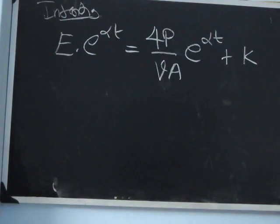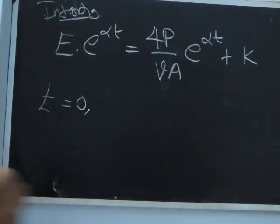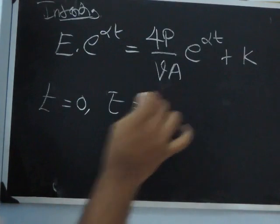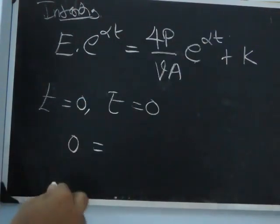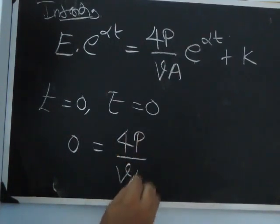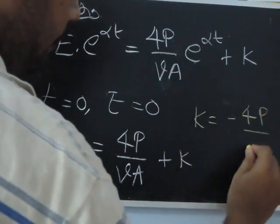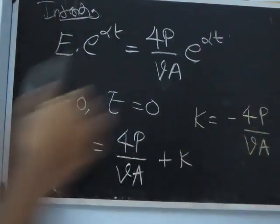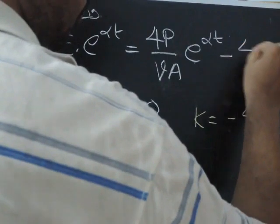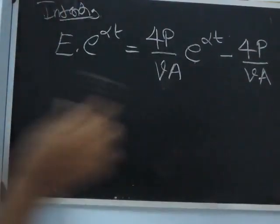It's easy to find the arbitrary constant K using boundary conditions. At T equal to 0 — the time when we switch on the power source — before that there is no sound energy in the room, so E equals 0. Substituting: 0 equals 4P by VA times e^0 plus K, and e^0 is 1, so 0 equals 4P by VA plus K. From this, K equals minus 4P by VA.